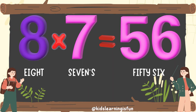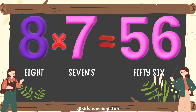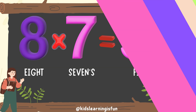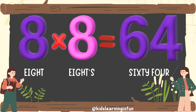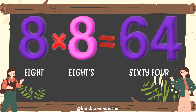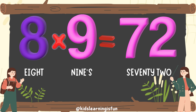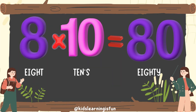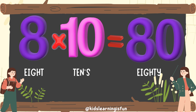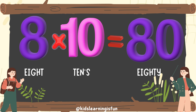Eight sevens are fifty-six. Eight eights are sixty-four. Eight nines are seventy-two. Eight tens are eighty.